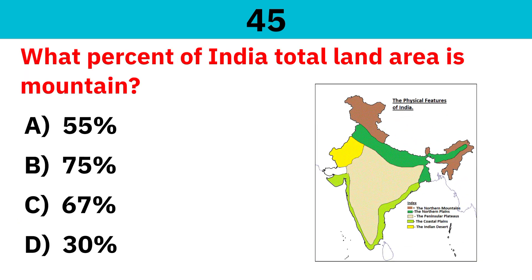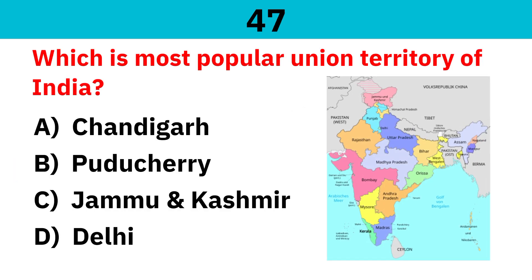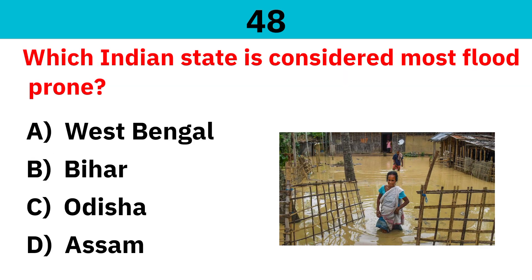What percent of India's total land area is mountain? Correct answer is 30%. What is India's rank in the world in terms of area? Correct answer is 7th. Which is the most populous union territory of India? Correct answer is Delhi. Which Indian state is considered most flood-prone? Correct answer is Bihar.